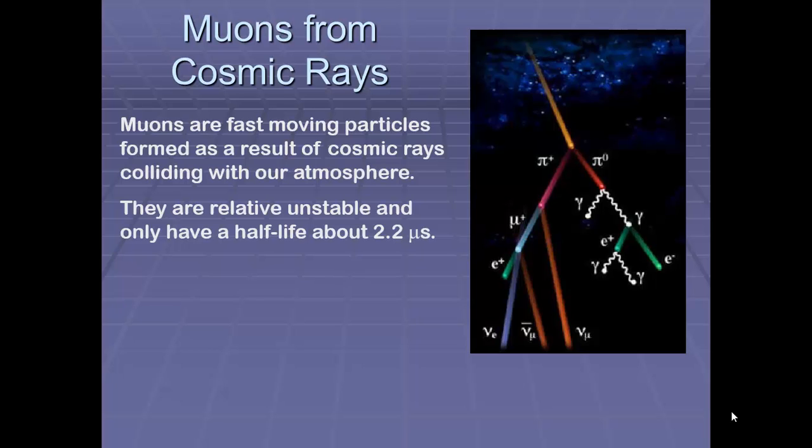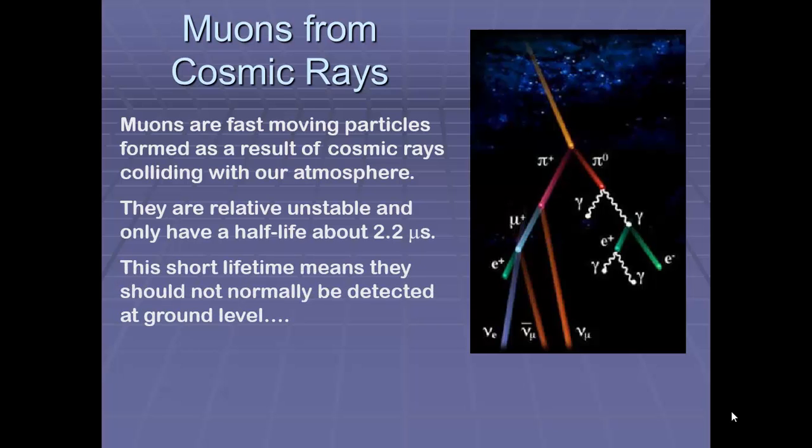And they're relatively unstable. They only have a half-life of about 2.2 microseconds. So that means that they don't normally or shouldn't normally be detected at ground level because although they're created and they're travelling fast, the distance between the top of the atmosphere and the ground normally means that they have decayed. Let me take you through the story.